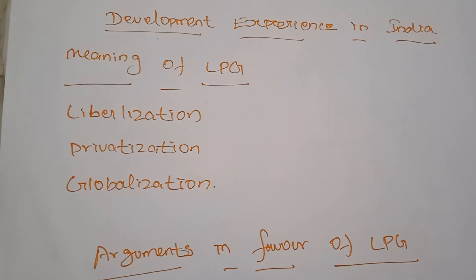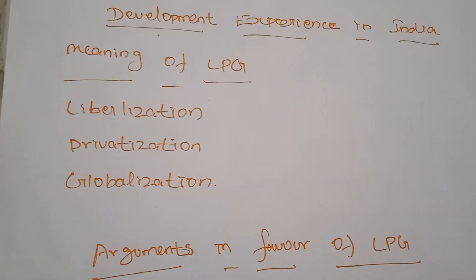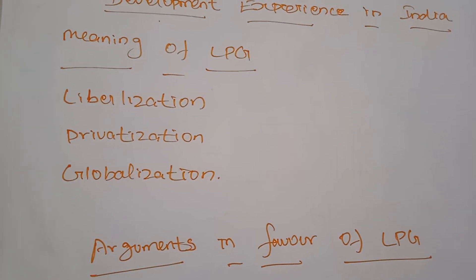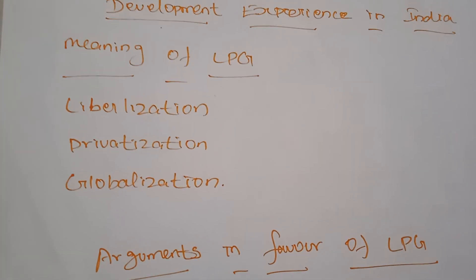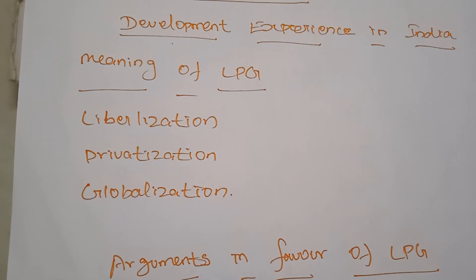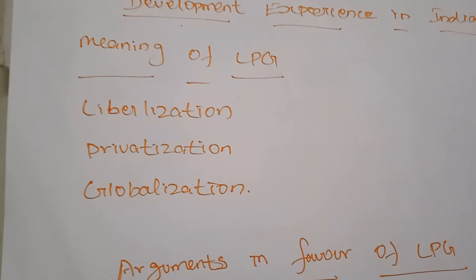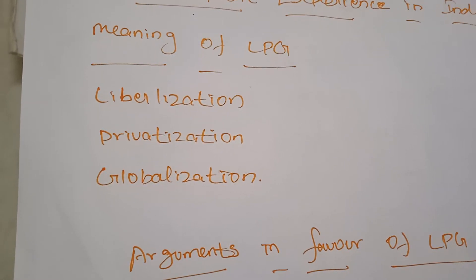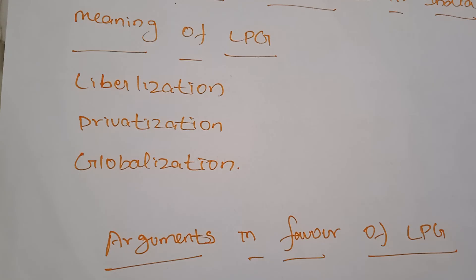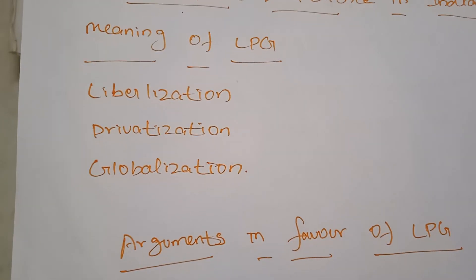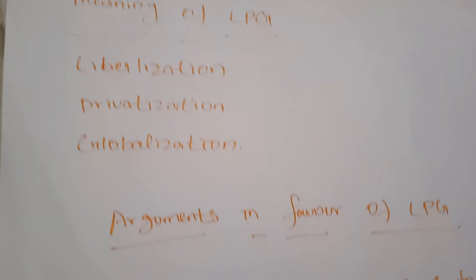The tenth five-year plan also aimed to reduce the poverty ratio to 15 percent; at that time poverty had been reduced by 10 percent. The eleventh five-year plan's main objective was faster and more inclusive growth. The twelfth and last five-year plan's objective was faster and sustainable growth, because rapid growth must also focus on sustainability. The 12th five-year plan gave the most importance to faster growth with sustainability.